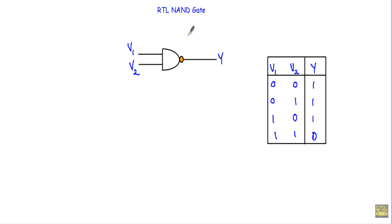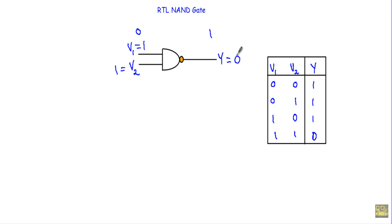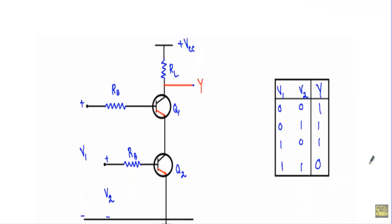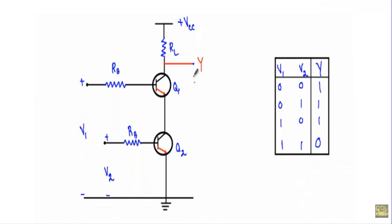In this video I will show you the operation of an RTL NAND gate. This is a two-input NAND gate. If at least one of the inputs is at logic zero, the output will be at logic one. For the first three cases: zero-zero output is one, zero-one output is one, and one-zero output is one. But if both V1 and V2 are at logic one, the output will be at logic zero. This is the circuit structure of the RTL NAND gate and its truth table.